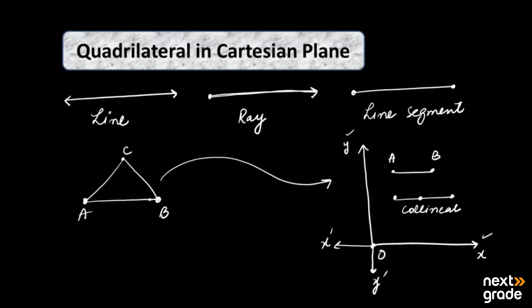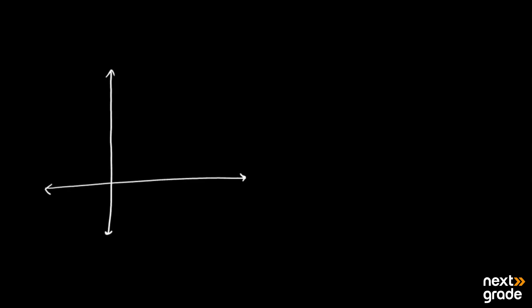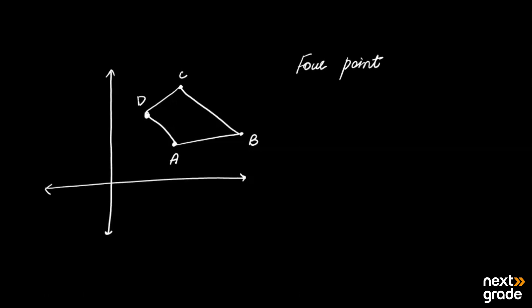If the three points are collinear, they will form a straight line. So that was for three points. If there is a polygon shape, then you represent four points. So first of all, we consider a Cartesian plane and take four random points. When you join these four points in a regular way — A to B, then B to C, then C to D, and D to A — the resulting shape is four-sided.